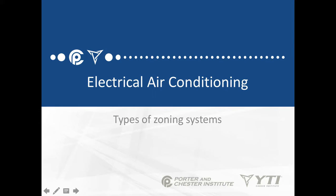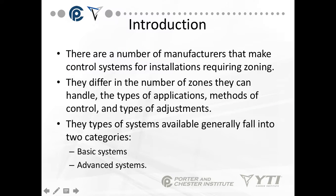In this presentation, we're going to talk about the different types of zoning systems that are possible with air conditioning. Zoning basically allows me to have different thermostats in different areas in a conditioned space. For example, in a ranch-style house, I may want to have one furnace or air conditioning system, but be able to individually control different parts of the house with its own thermostat.